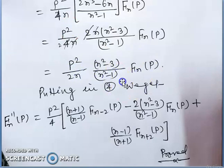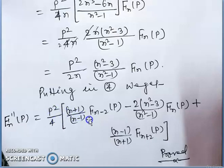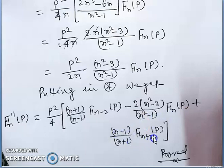Putting these values into equation 4 and simplifying, we get the final result: fn''(p) = p²/4 * [(n+1)/(n-1)*f_{n-2}(p) - 2*(n²-3)/(n²-1)*fn(p) + (n-1)/(n+1)*f_{n+2}(p)]. So this is the second derivatives of the Hankel transform.